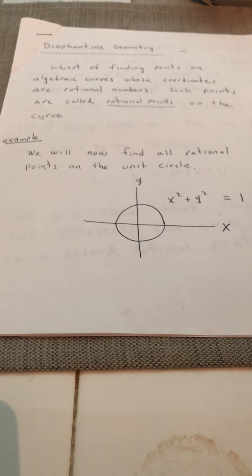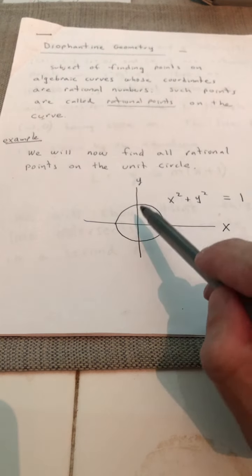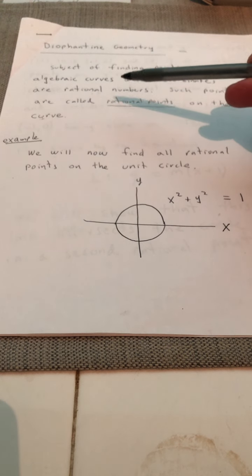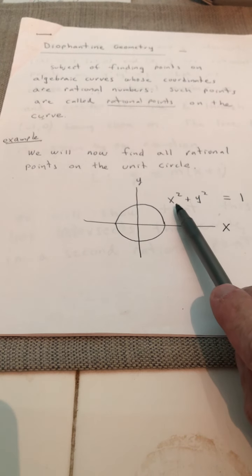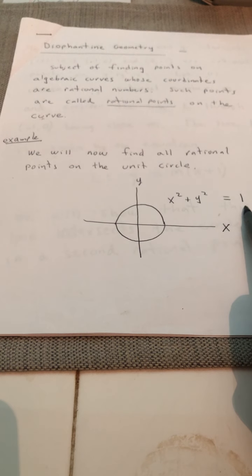So one example is the unit circle. That's an example of an algebraic curve. So what we want to do is find all rational points on the unit circle, x squared plus y squared equals one.